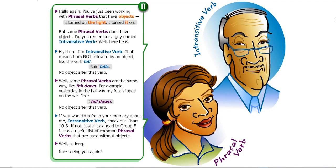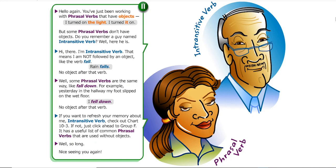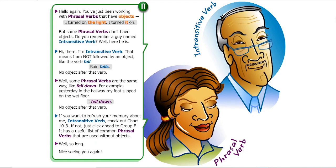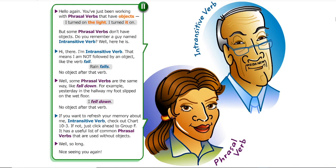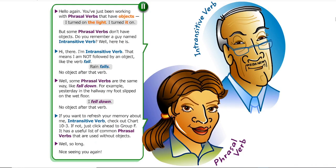Well, some phrasal verbs are the same way, like 'fall down.' For example, yesterday in the hallway, my foot slipped on the wet floor. I fell down. No object after that verb.